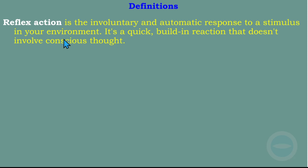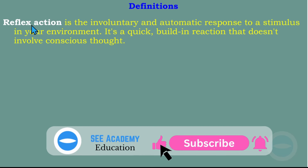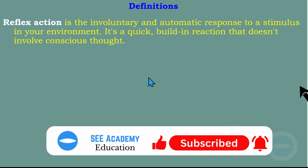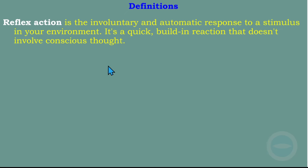Let me start with some definitions. The reflex action is the involuntary and automatic response to a stimulus in your environment. It's a quick built-in reaction that doesn't involve conscious thought. The reflex action takes place without involving our brain — our body just automatically takes the action without involving the brain.